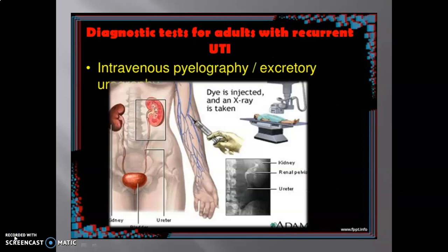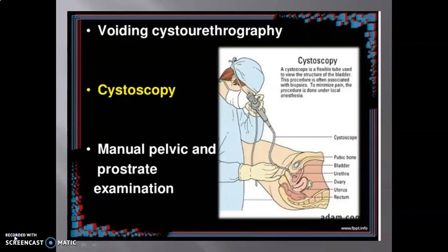Diagnostic tests for adults with recurrent UTI include intravenous pyelography, voiding cystoscopy, and manual pelvic and prostate examination.